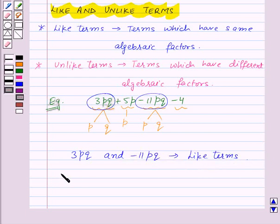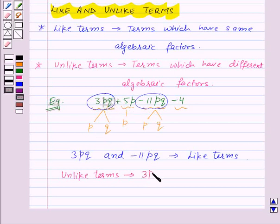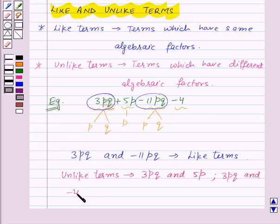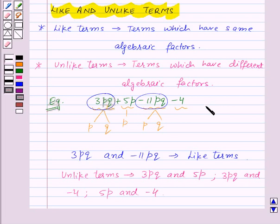Now let's see the unlike terms. Here, 3PQ and 5P have different algebraic factors, so that means 3PQ and 5P are unlike terms. Similarly, 3PQ and minus 4 are unlike terms. Also, 5P and minus 4 are unlike terms. In this way, we can find out like terms and unlike terms in a given algebraic expression.